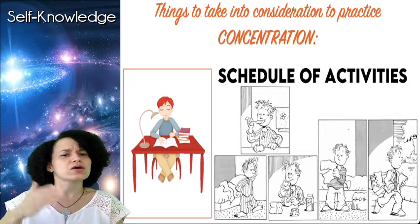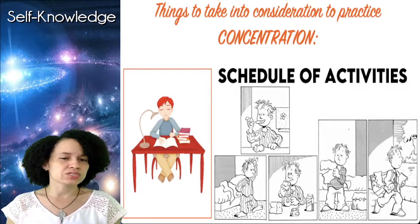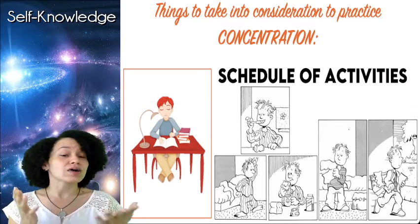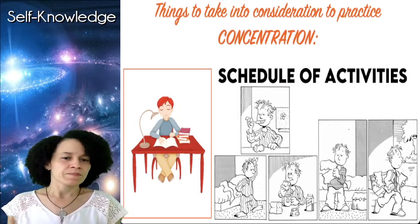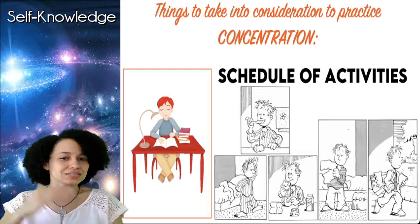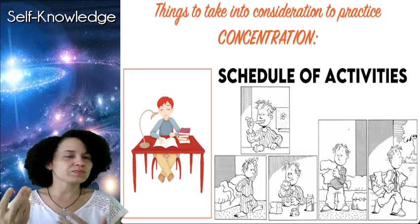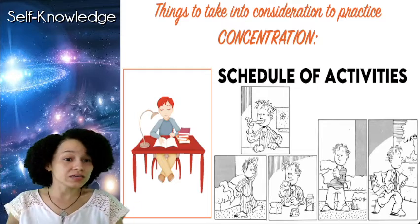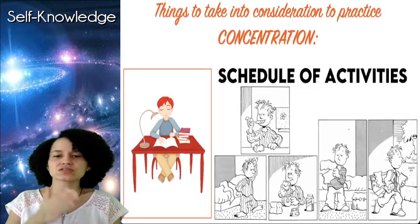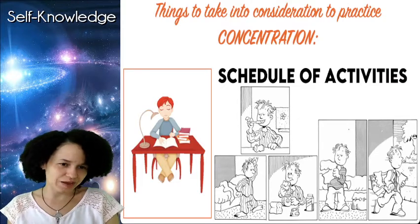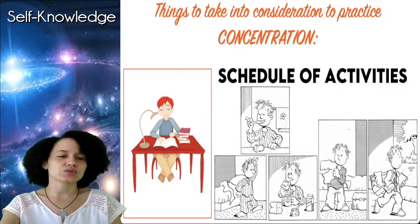Something very helpful for doing the different activities of our daily life in a concentrated way is to take a few minutes every day to make a schedule of activities — listing the different activities we have to do during the day and the order in which we will do them. This will help us not to be planning or thinking about what we'll have to do later, but to focus on each action at each time. That is very important to take into account.